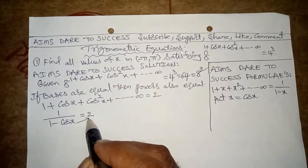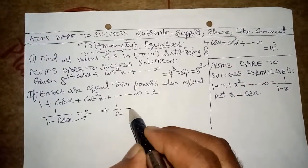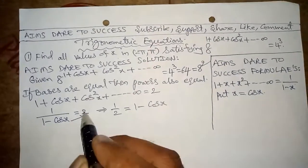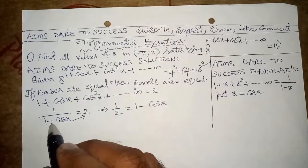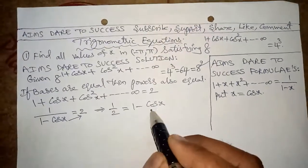We get 1/2 = 1 − cos x. 2 coming to down, 1 − cos x coming to right side. We get 1/2 = 1 − cos x. This minus cos x coming to left side, 1/2 coming to left side.